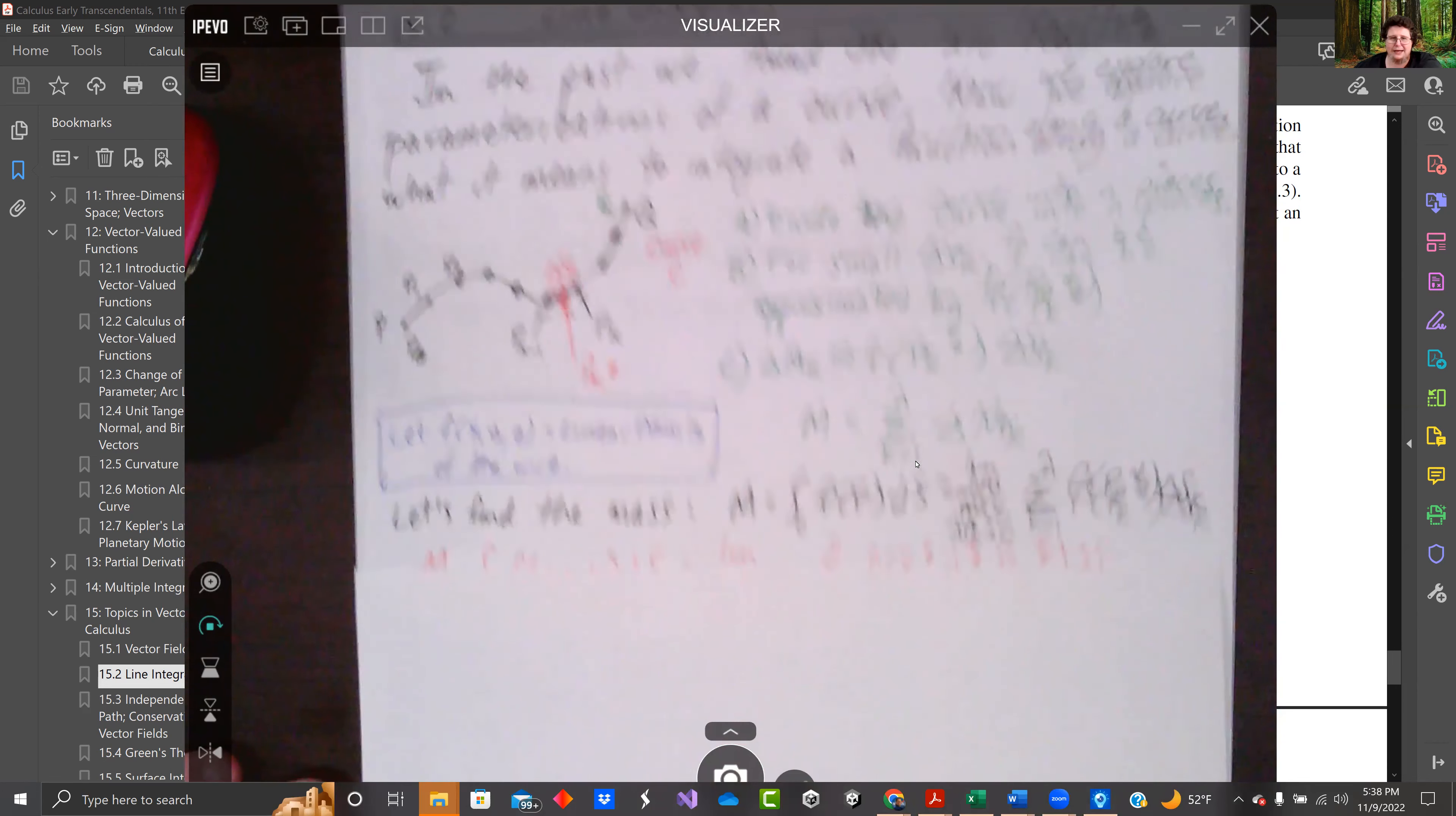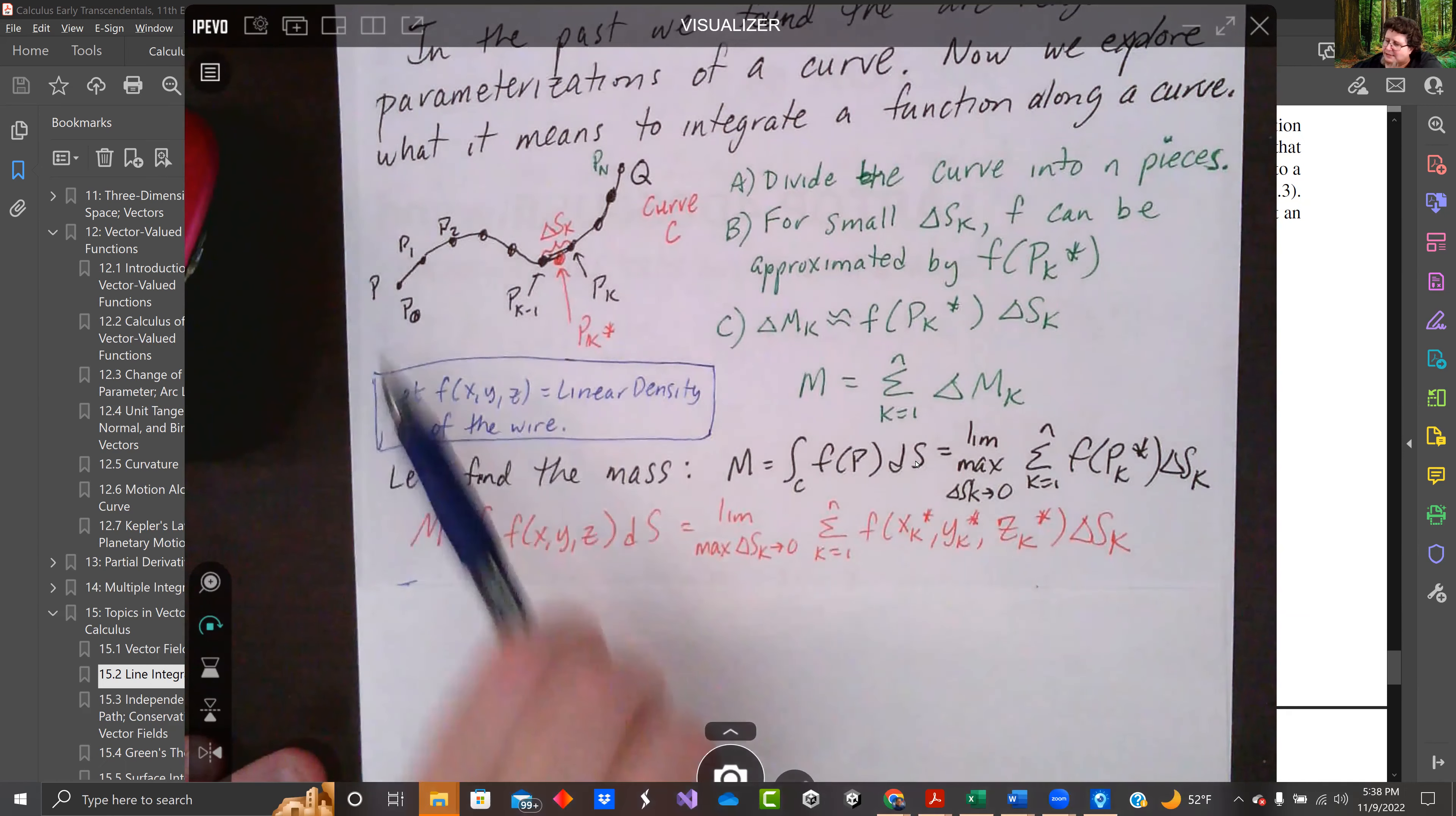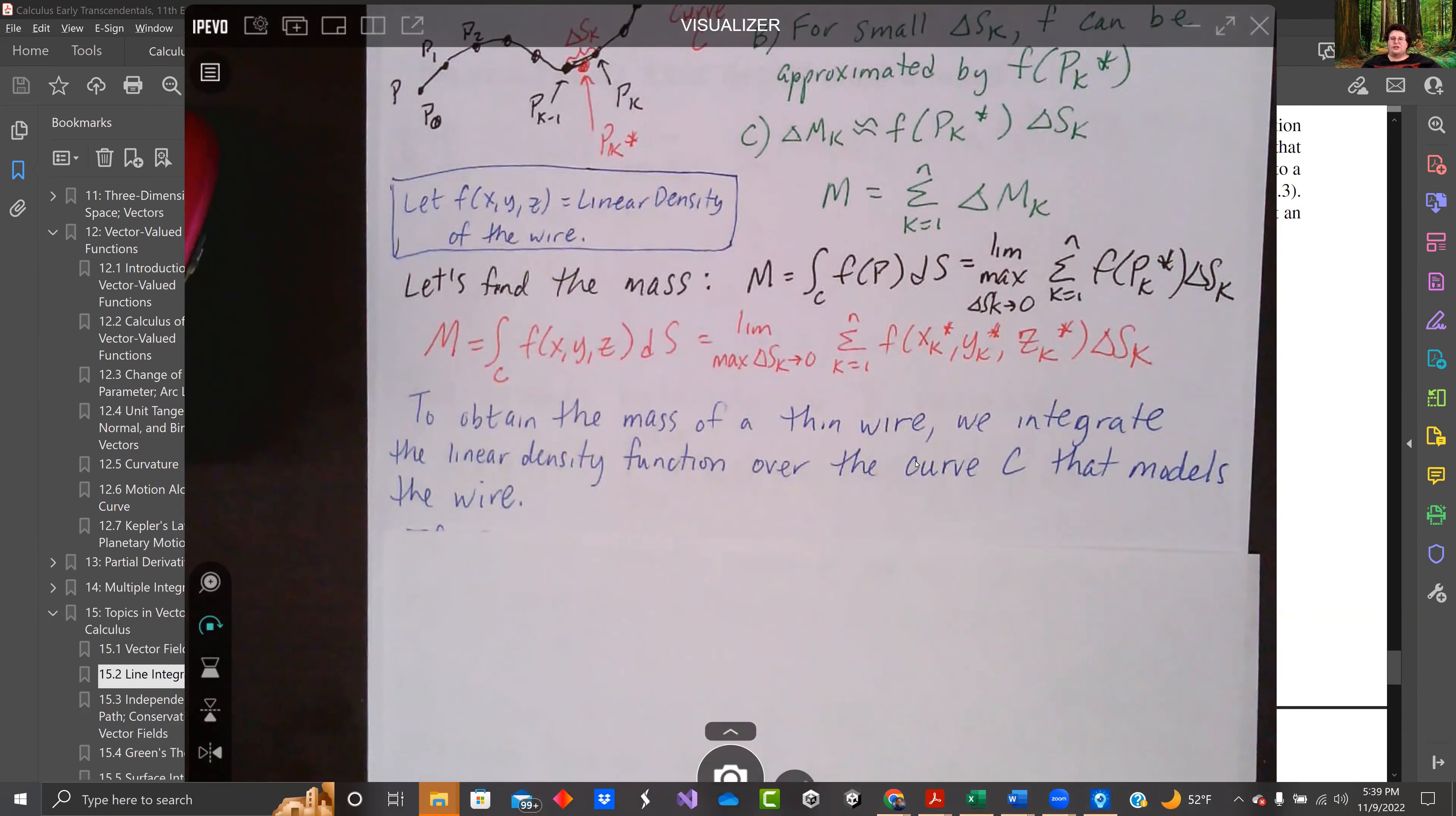Of course, we can do the limit as those little tiny pieces go to zero. The reason why we say the limit is the max delta sk goes to zero. Depending on how we parameterize it, different arc length sections might be longer than others. So we want the longest one to go to zero. If we do that, we get this integral along this curve. We're finding the mass of this line, but it's going along this curve, so we put a c. c says we're doing a line integral across a curve. We're doing ds because we're doing it in relation to the arc length. So we would find the mass of the thin wire by integrating that linear density function over the curve c.